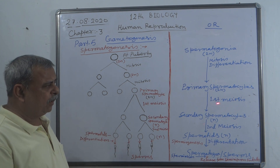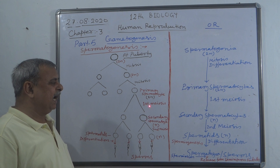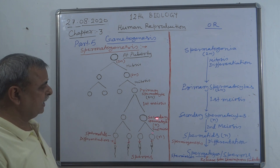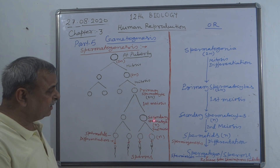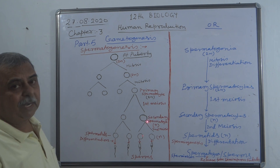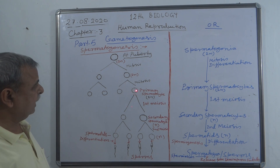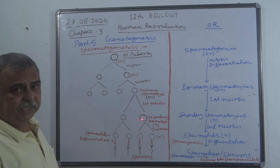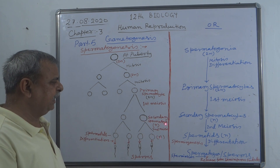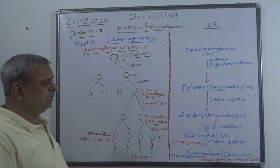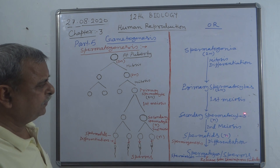The first meiotic division takes place in the primary spermatocytes and gives rise to a group of cells called secondary spermatocytes. These are the result of meiosis, so they have only half the number of chromosomes. If primary spermatocytes have 46 chromosomes, secondary spermatocytes have only 23 — represented by N, indicating the haploid condition.